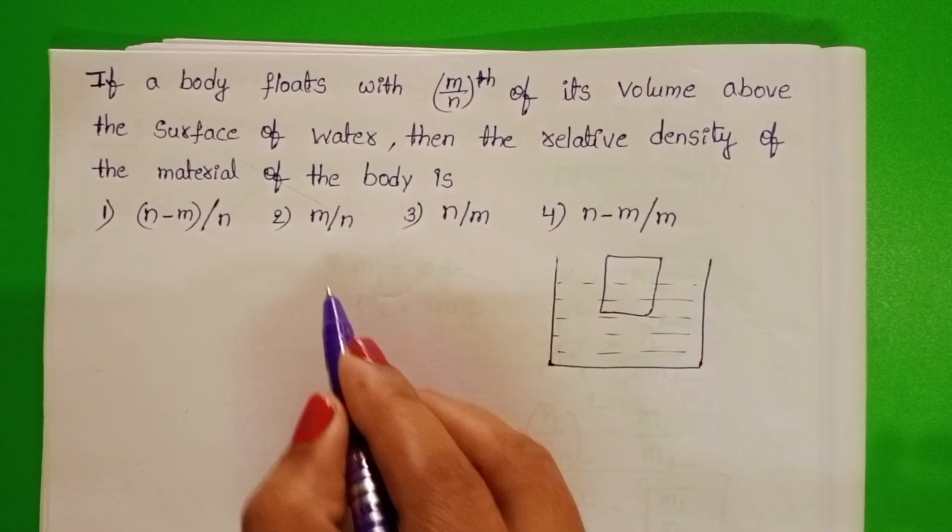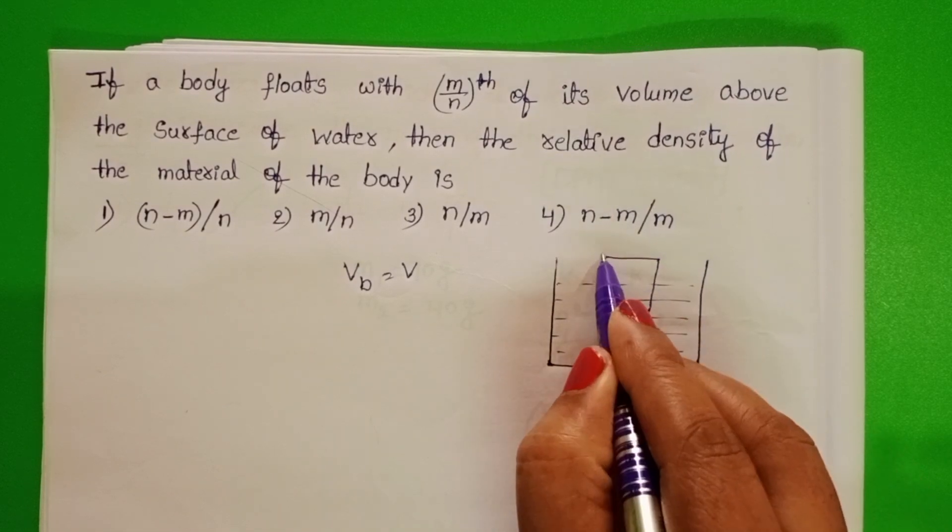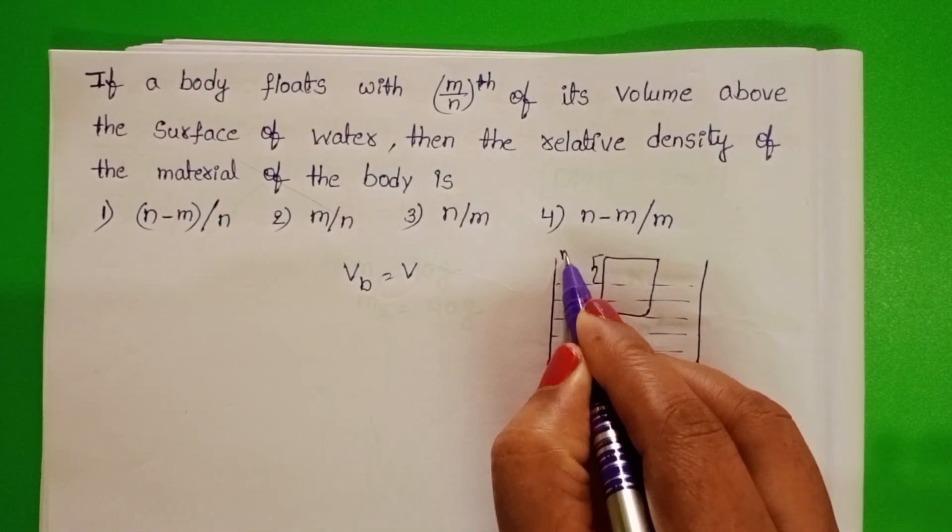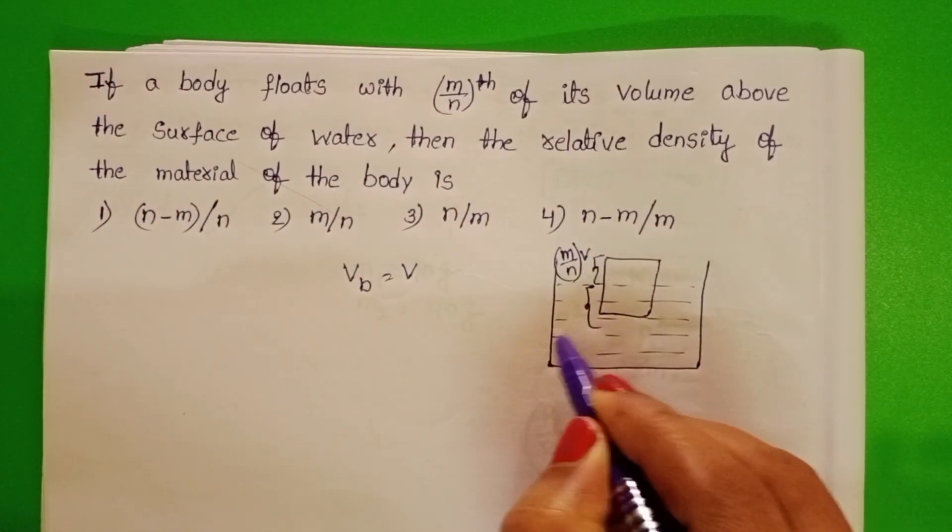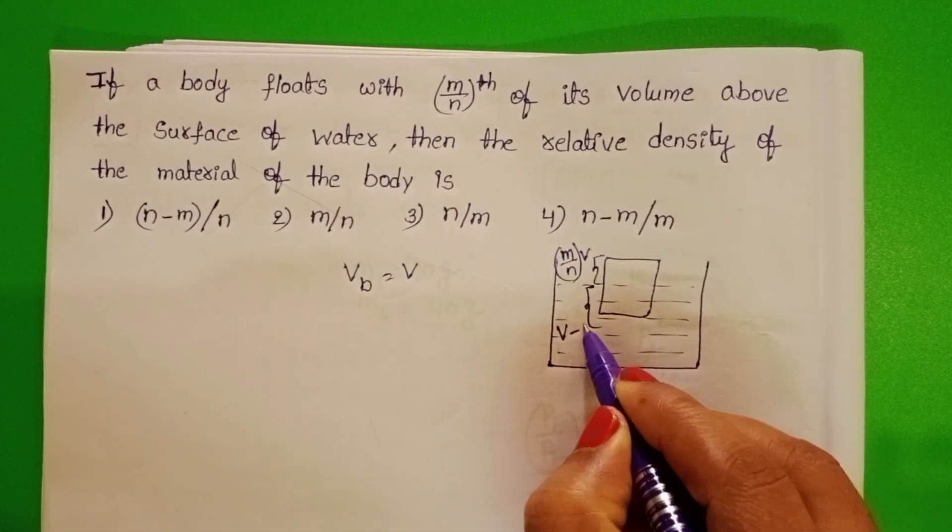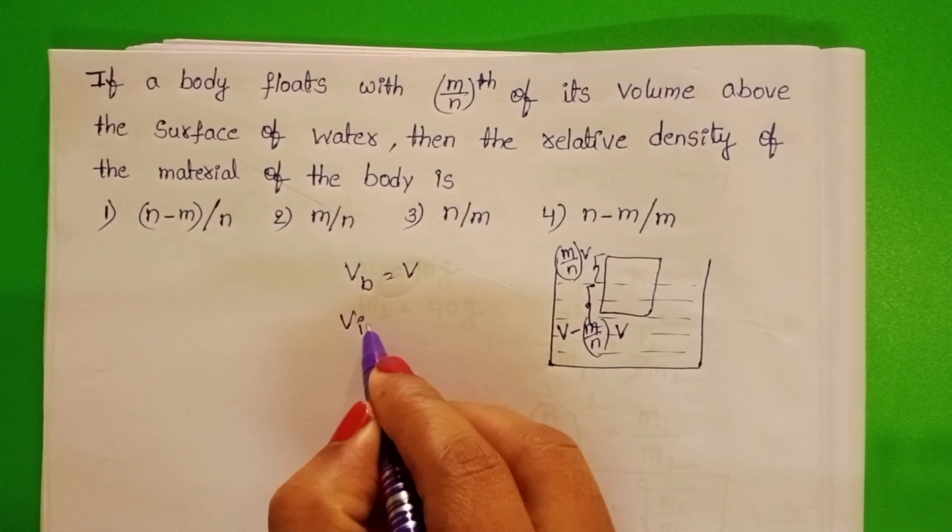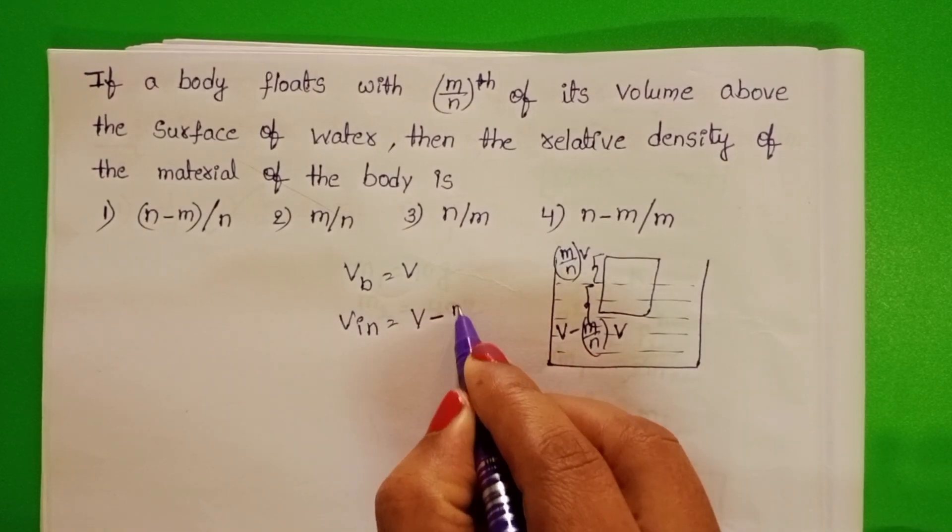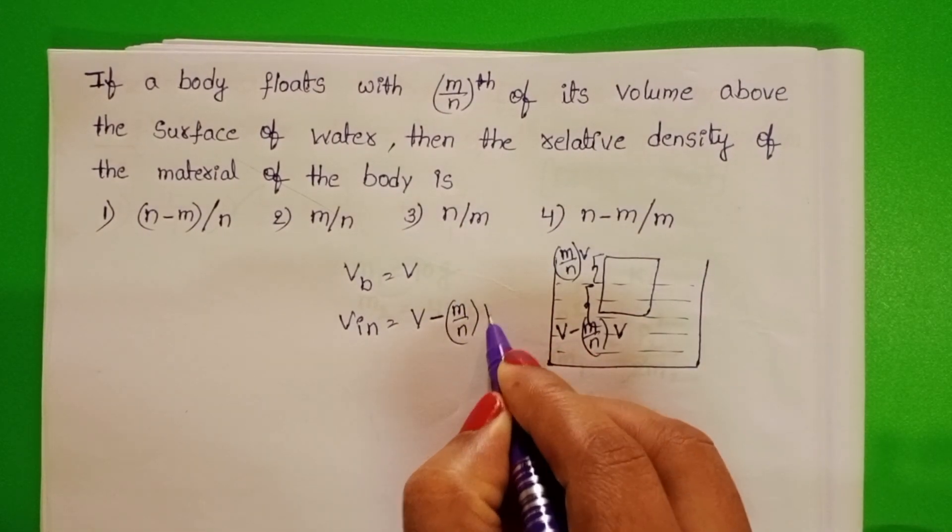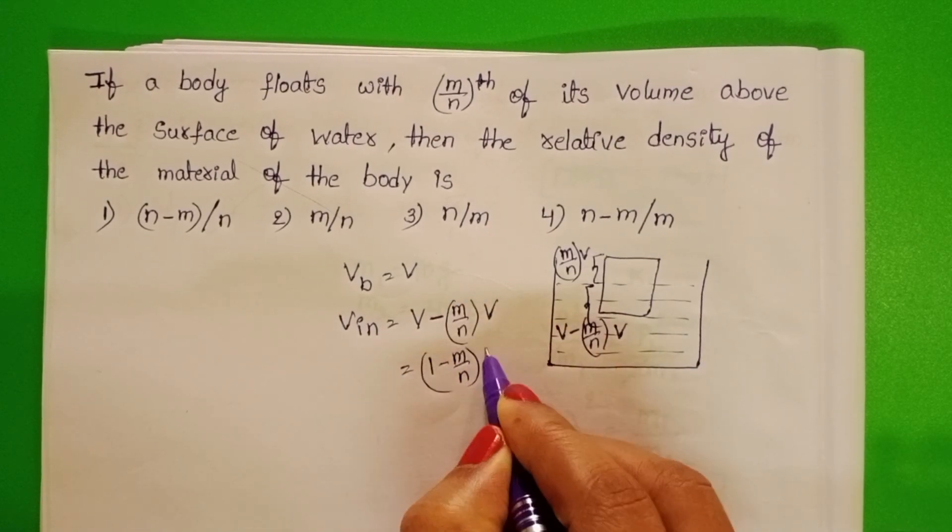Let us take volume of the body equals V. How much part is above the surface of water? m by nth of its volume. So this part is V minus m by n times V. Volume inside the water equals V minus m by n times V. Take V common: 1 minus m by n times V.